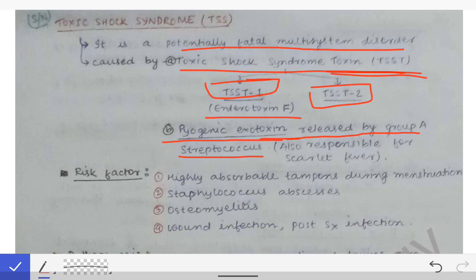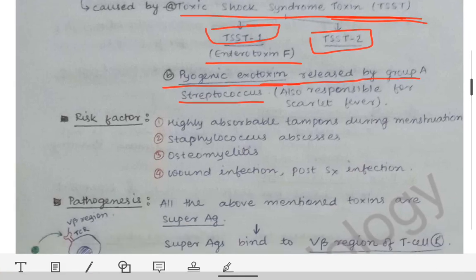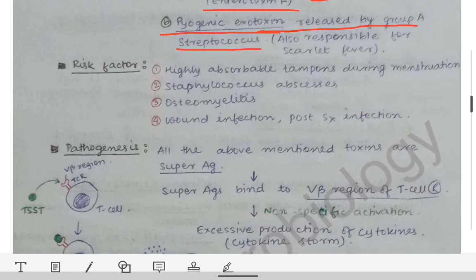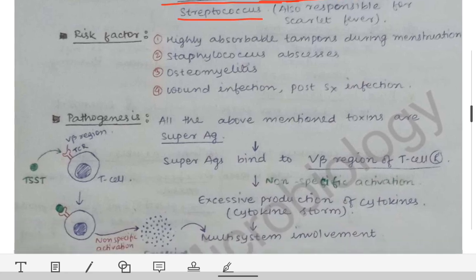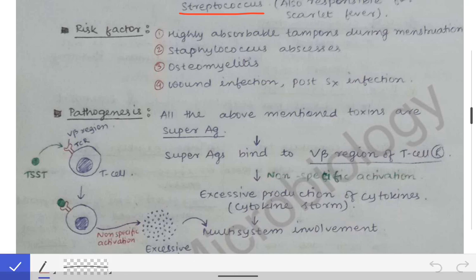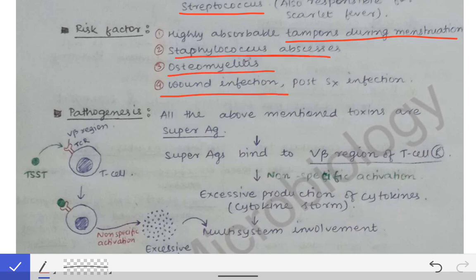What are the risk factors for toxic shock syndrome? The risk factors include highly absorbable tampons used during menstruation — if a woman uses highly absorbable tampons for a prolonged period, there is a high chance of developing toxic shock syndrome. Other risk factors include Staphylococcus abscess, osteomyelitis, or wound infection with Staph aureus.